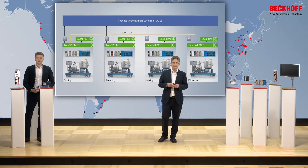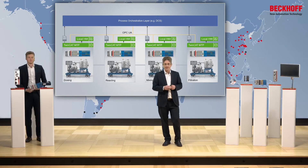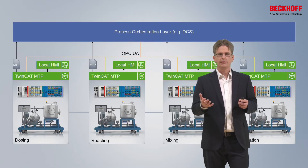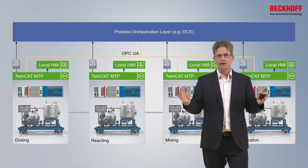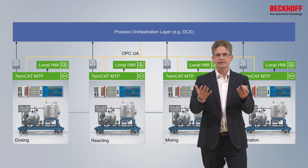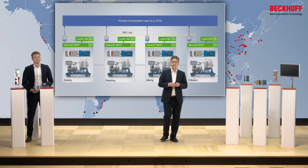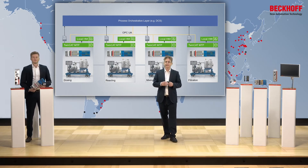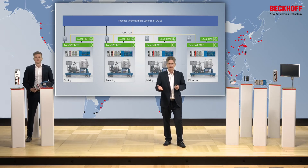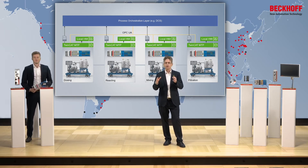Additionally, MTP contains the P&ID — the internal structure of the module. It is therefore capable of rendering a user interface for the complete plant consisting of different modules, providing a user interface in a homogeneous way. The MTP could also be used for generating a local HMI within the module, which is often required for a local control system.